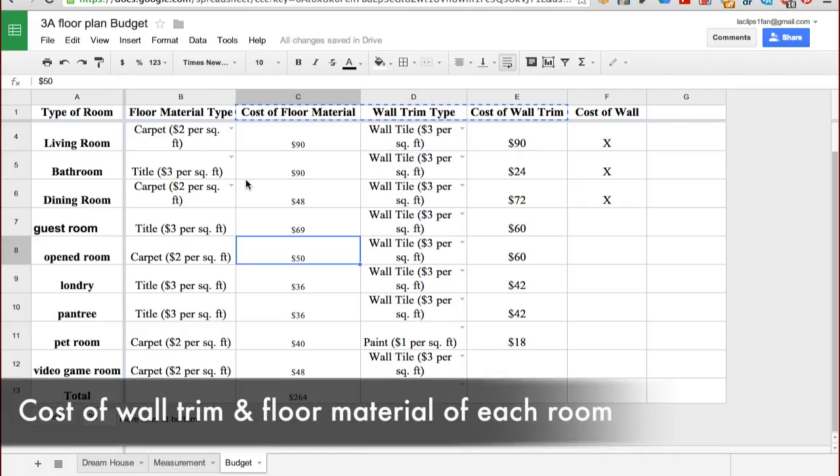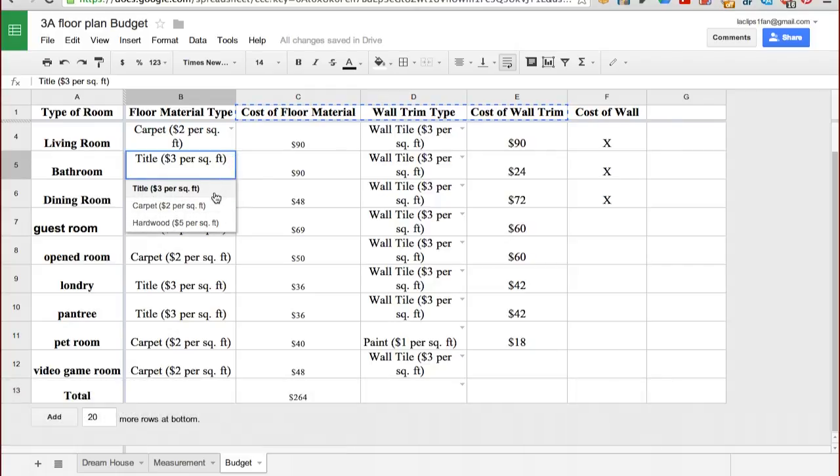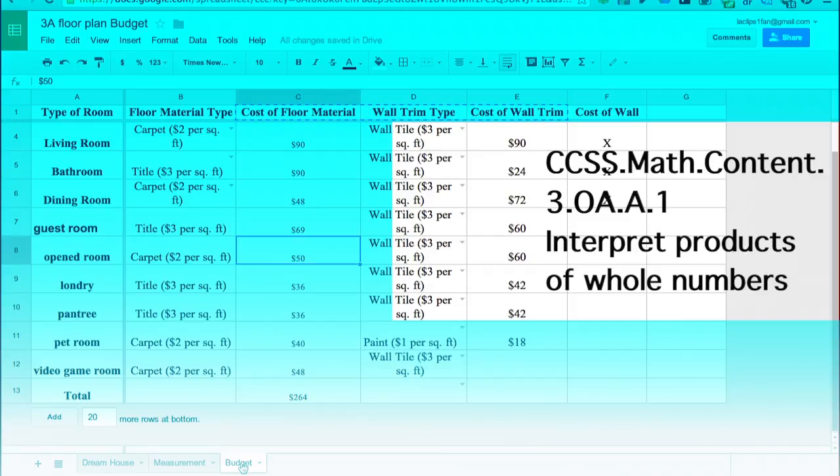The third sheet contained the cost of wall trim and floor material of each room. This activity involved the operations and algebraic thinking Common Core standard, which states students will be able to interpret products of whole numbers.